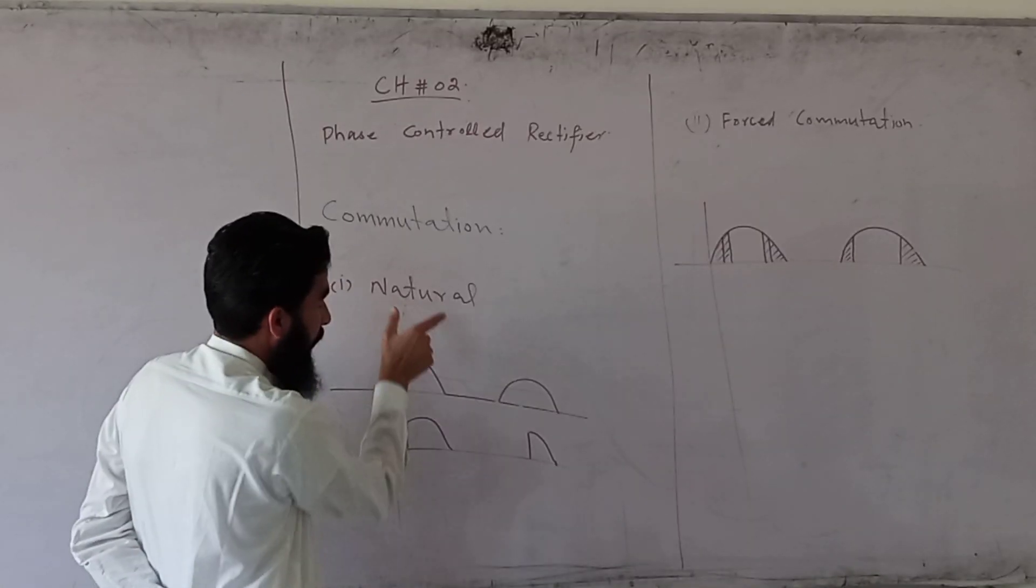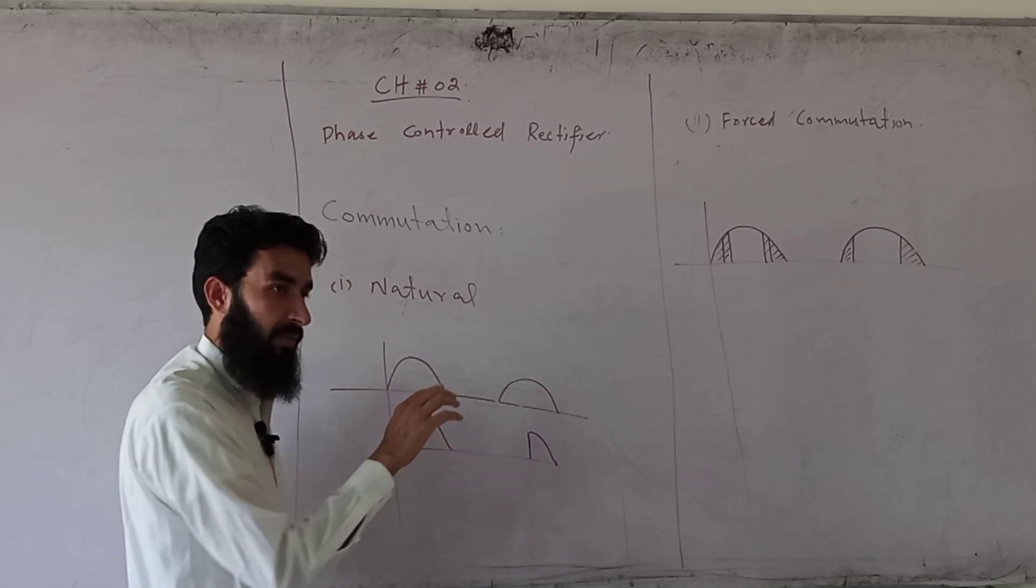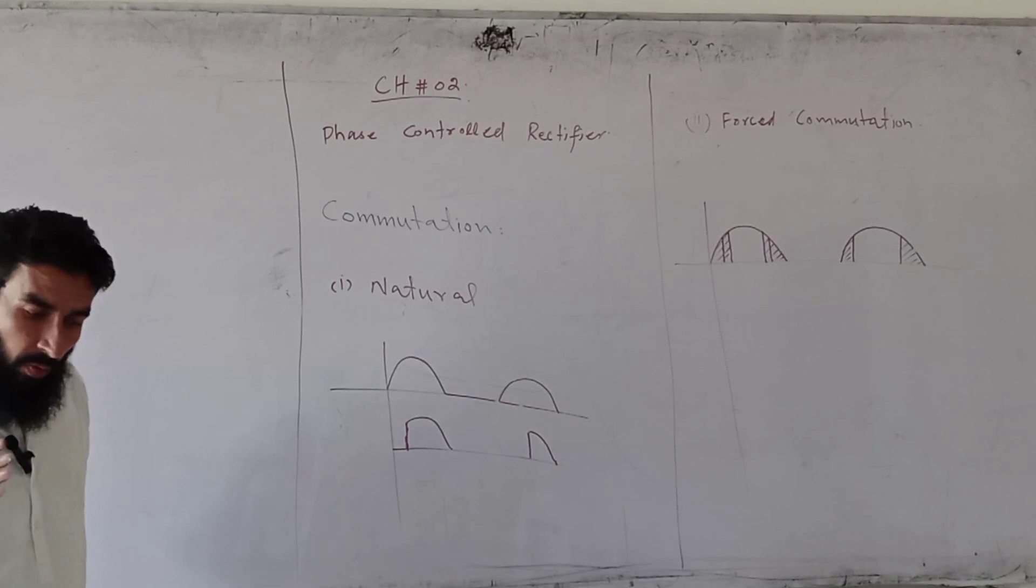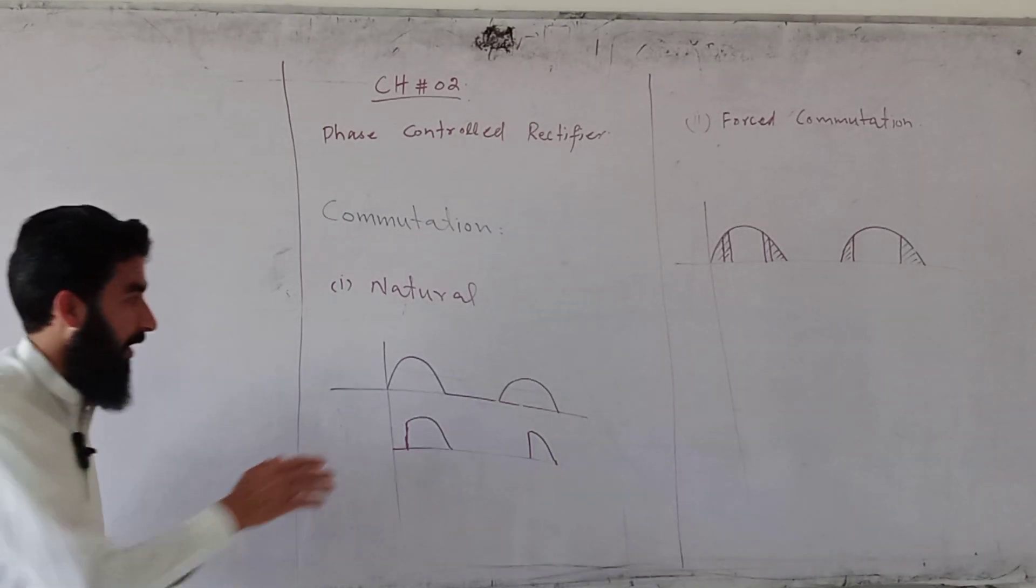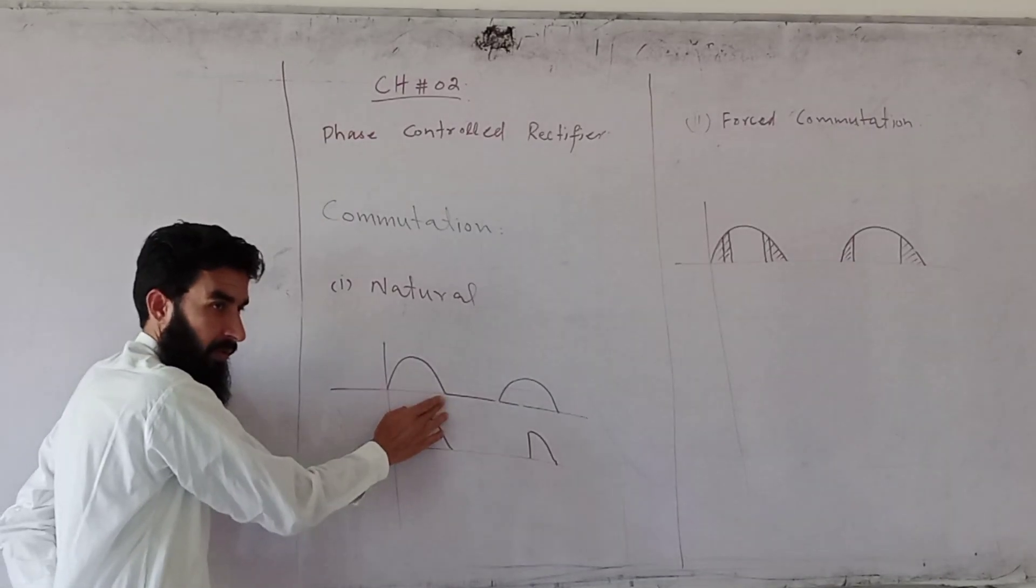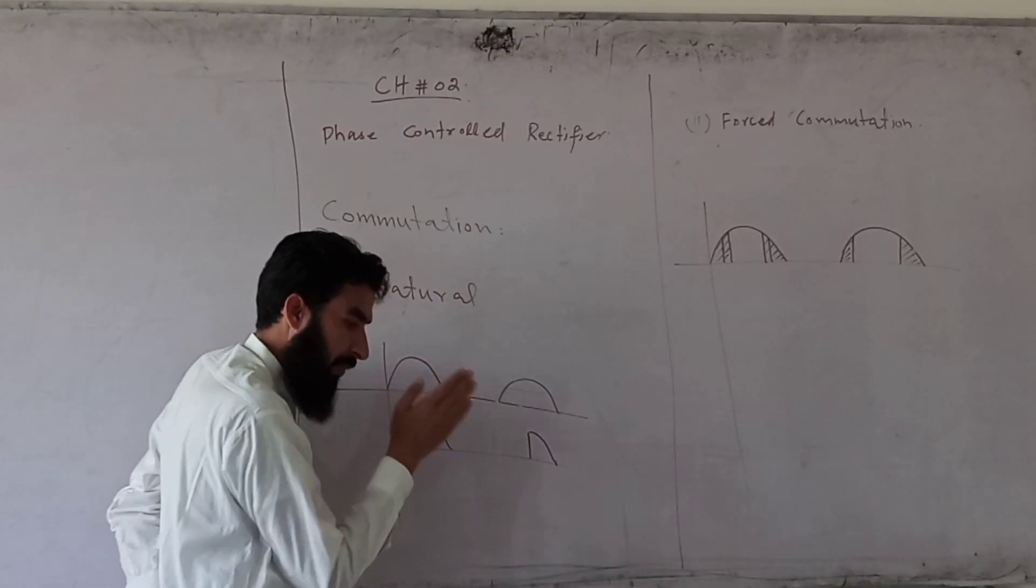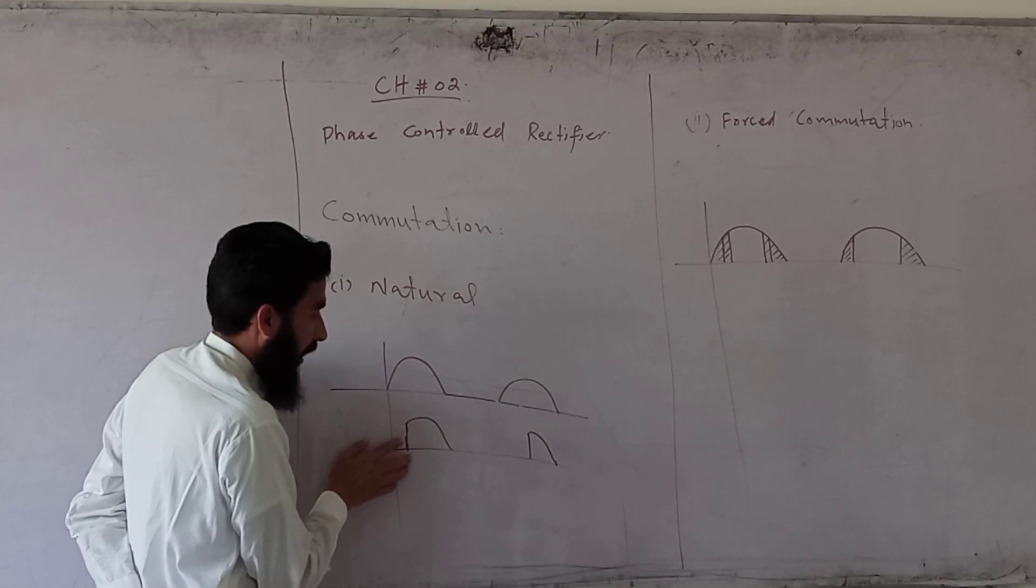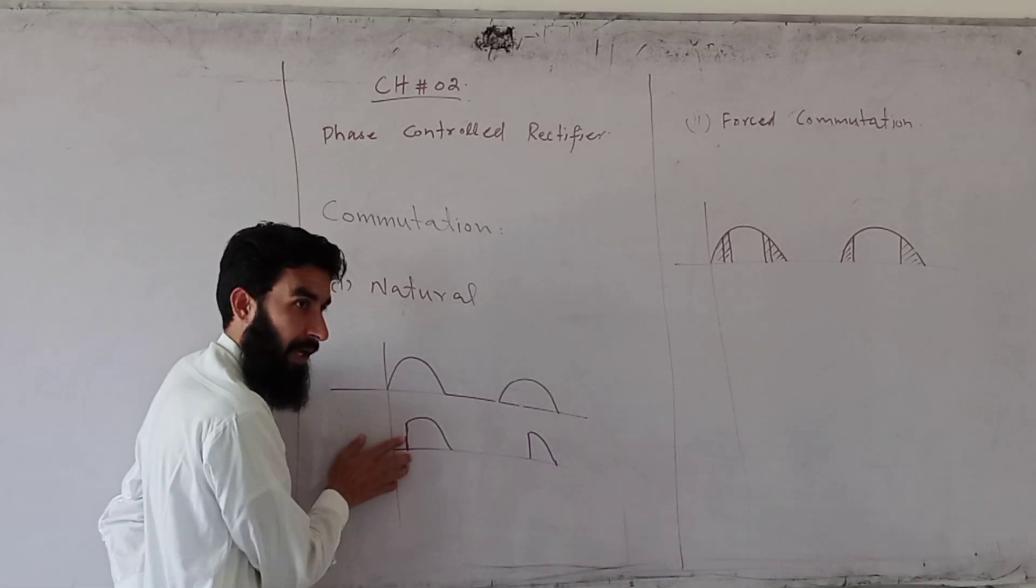Natural commutation is at 180 degrees. If you are positive, you can block it naturally.